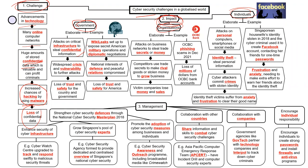At the government level, governments collect and store sensitive information — SingPass passwords, CPF savings, health records — all stored online. Other countries may target each other and try to steal this information, which can cause people to lose trust in their government. If people feel the government is not protecting their data properly, they may be unwilling to share information. A prominent example is WikiLeaks, which leaked a large amount of American military information, threatening US national security and reducing trust in the American military.